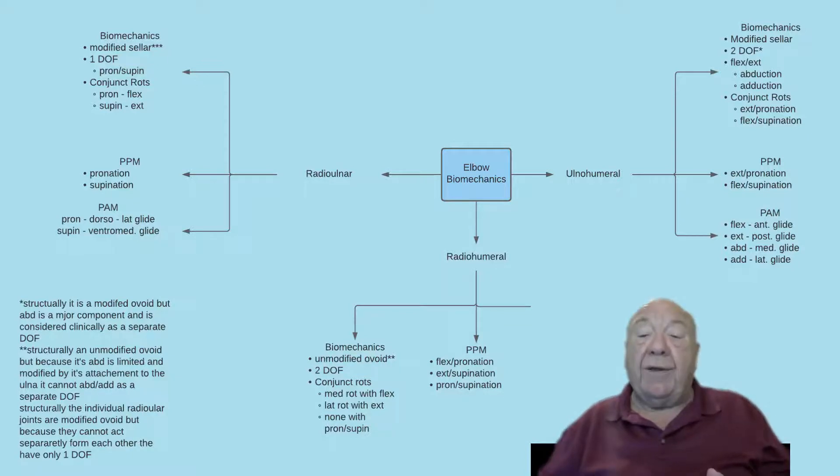For pronation and supination, there is no glide because it's a spin. So your test for this ability to spin is distraction. You can either do that with the capsule tightened up in the direction that you're interested in, say pronation, and then feel the end feel for that distraction and then the amount of movement, and then compare it to the other side.